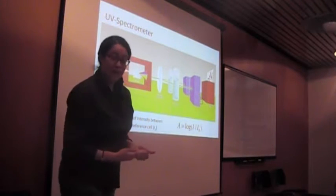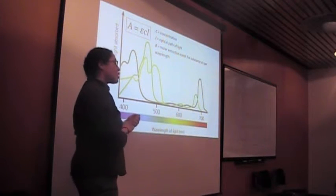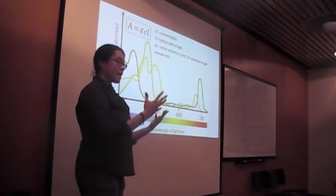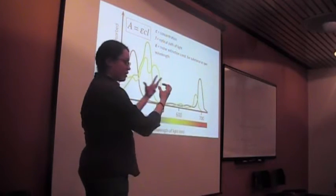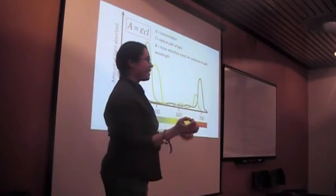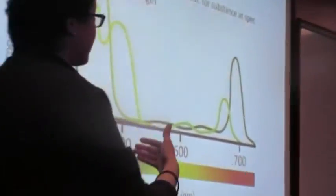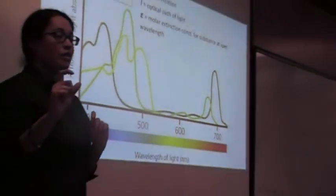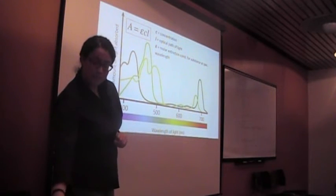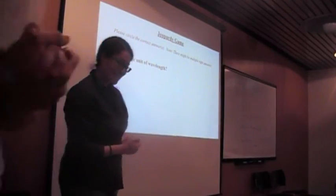And if we have the absorbance spectrum, we have a measure of the concentration of a specific compound in a sample. So if we take our carotenoids along with the leaves and put it in a blender, we're mixing beta-carotene and chlorophyll, and if we do the UV spectrometry, we can actually determine the concentration of each of these two compounds.